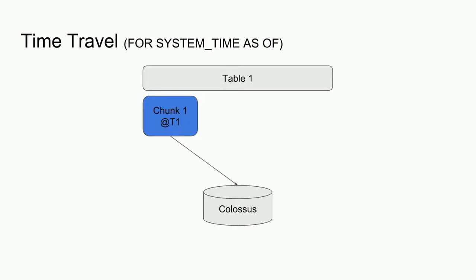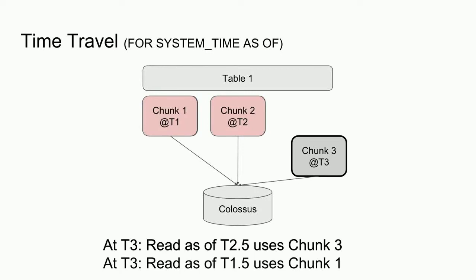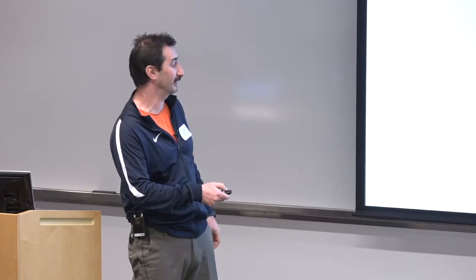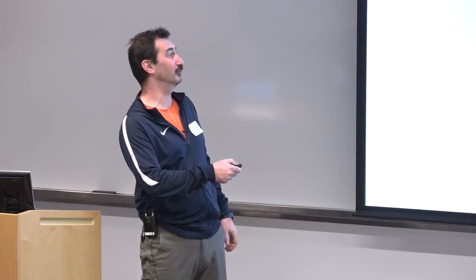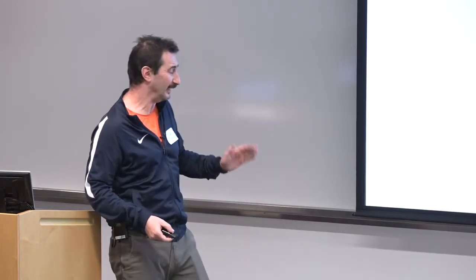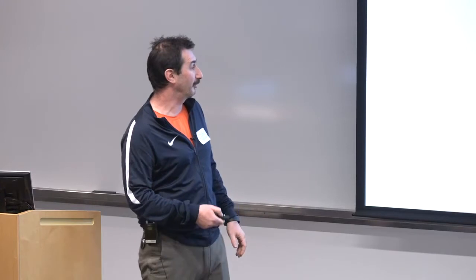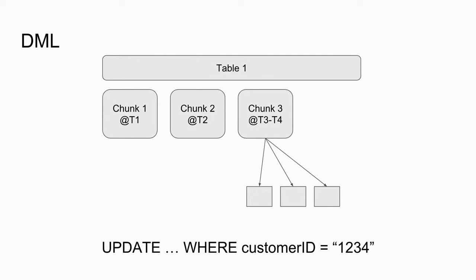Time travel works simply with immutable data. If we appended two chunks and the storage optimizer created a merged one: if you want to see data after T2, you query the merged chunk since it contains the same data. If you want data between T1 and T2, you go to the older chunk. This is almost a side effect of the storage architecture. For DML updates, since we can't rewrite existing immutable chunks, we write a new chunk and the metadata transaction manager knows which data came from which chunk.